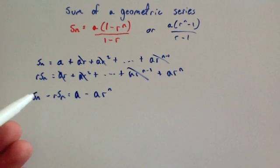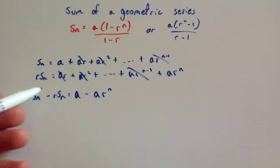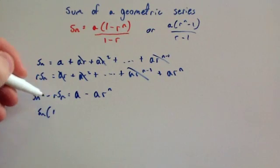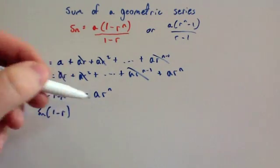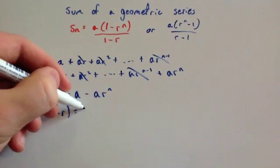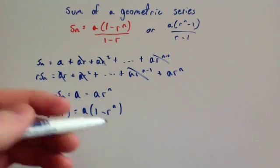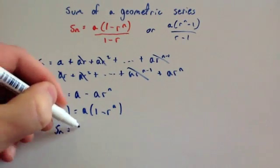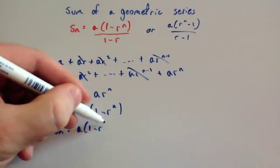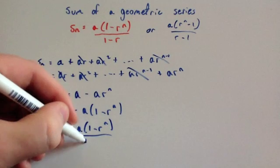So what we're going to do is factorise both of these. Let's take Sn out here, so you're going to get Sn bracket 1 minus R. And let's factorise this by taking out A, so you're going to get A bracket 1 minus R to the n. And then if we divide, we get Sn equals A bracket 1 minus R to the n over 1 minus R.